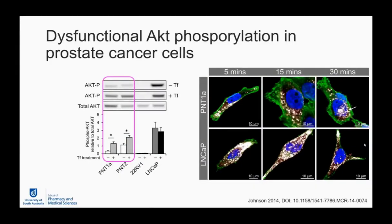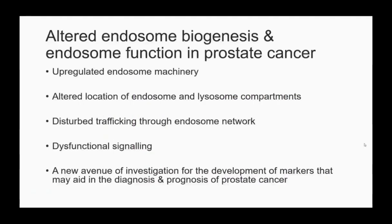This altered distribution also affects signaling. Using AKT phosphorylation as a measure, non-malignant cells PNT1A show upregulated AKT phosphorylation as expected, but this appears quite deregulated in cancer cells — with 22RV1 showing no detectable phosphorylation at all. The conclusion is that endosome biogenesis and endosome function are altered in prostate cancer. As a result of unregulated endosome machinery, the location of endosomes and lysosomes is altered, disturbing trafficking and signaling — presenting a potential new avenue for diagnostic and prognostic marker development.